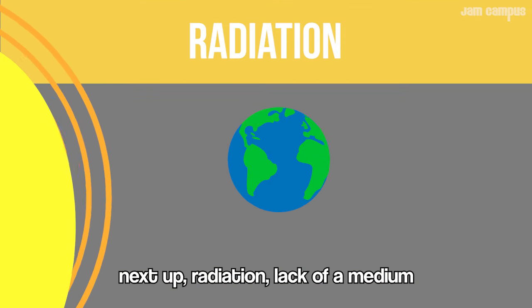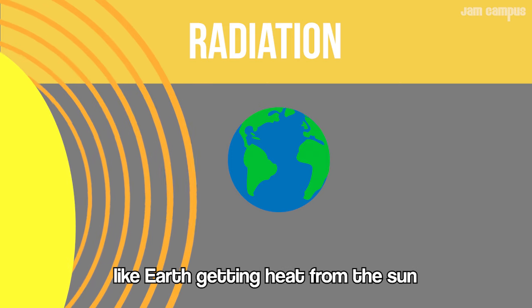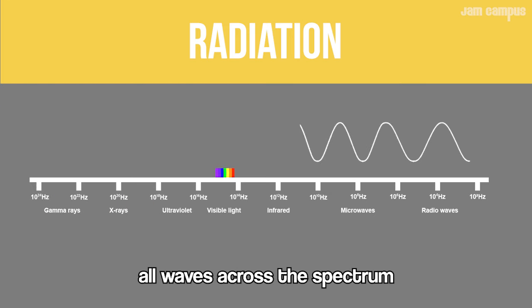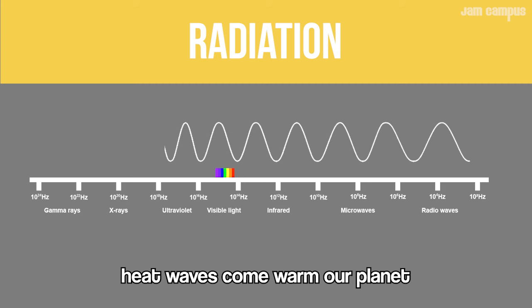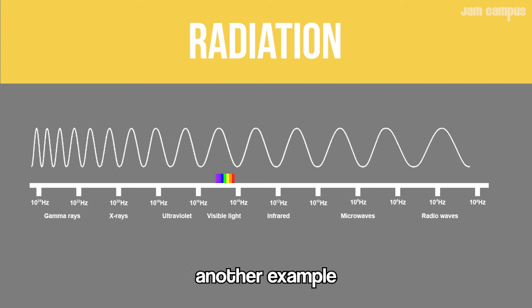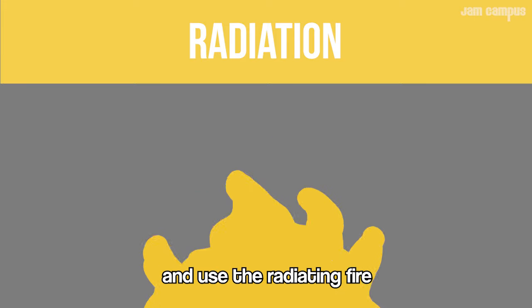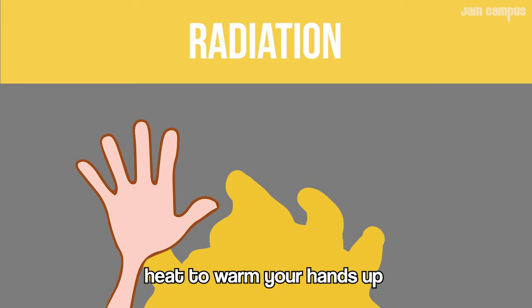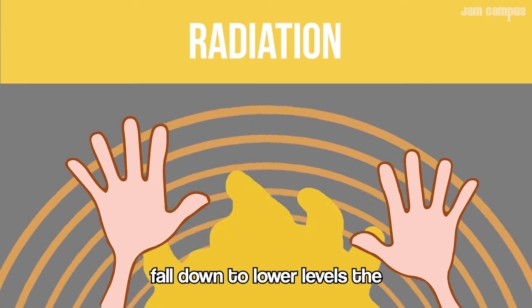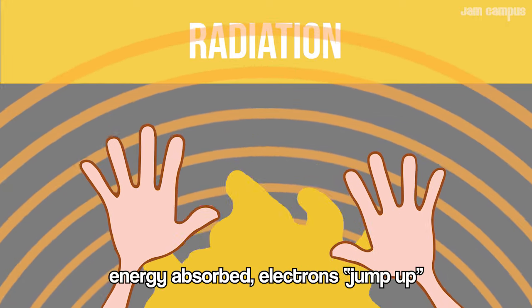Except radiation — it lacks a medium. Heat passes through waves like radiant heat from the sun. From radio to gamma, waves across the spectrum. Heat waves reach our planet since it's cooler than the sun. Another example: when there's a fire, you sit in front and use the radiating fire to warm your hands up.